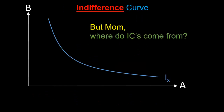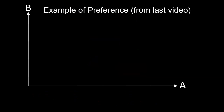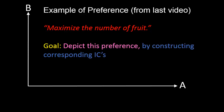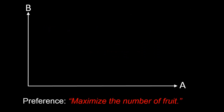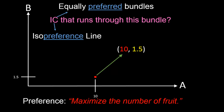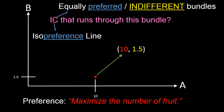But now you're probably wondering, where do indifference curves come from? Let's take a look at the example of preference from the last video. This preference was very simple and could be fully described in words as: maximize the number of fruit. What we are going to do is depict this preference on our graph by constructing the indifference curves that correspond to it. Let's pick any one bundle at random — say the bundle 10 apples, 1.5 bananas. Our question is: what does the indifference curve that runs through this particular bundle look like? Recall that an indifference curve is just an isopreference line — it consists of those bundles that are equally preferred to the red bundle, or those bundles that Chris is indifferent about when compared to the red bundle.